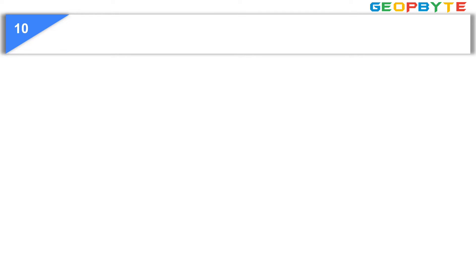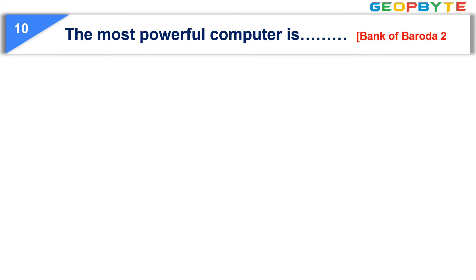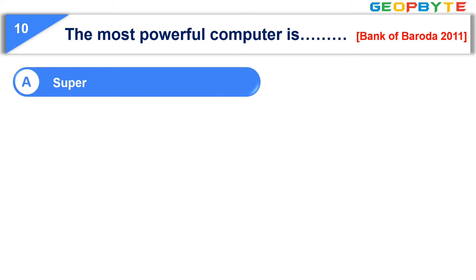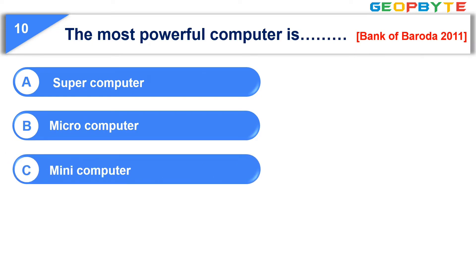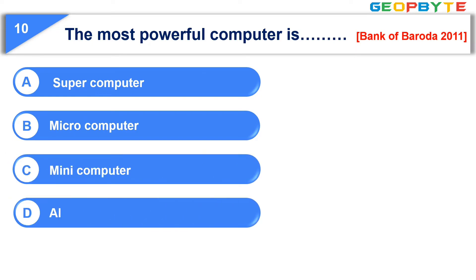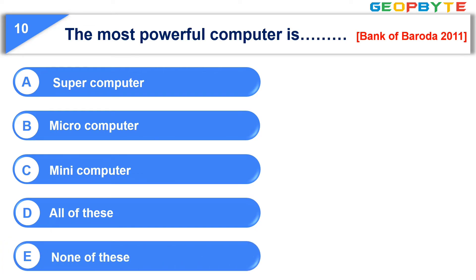Moving to question number ten. The most powerful computer is. Option A: Super computer. Option B: Micro computer. Option C: Mini computer. Option D: All of these. Option E: None of these. The correct answer is option A, Super computer.